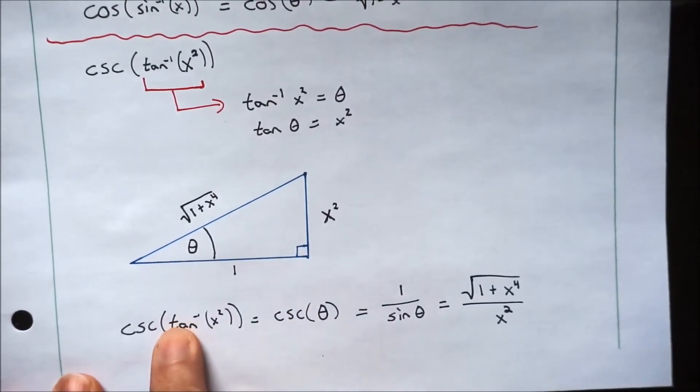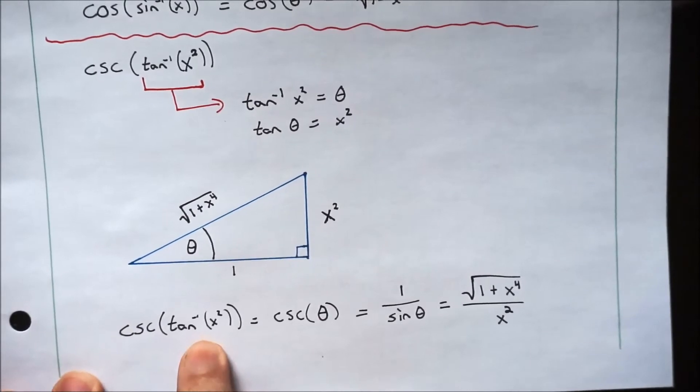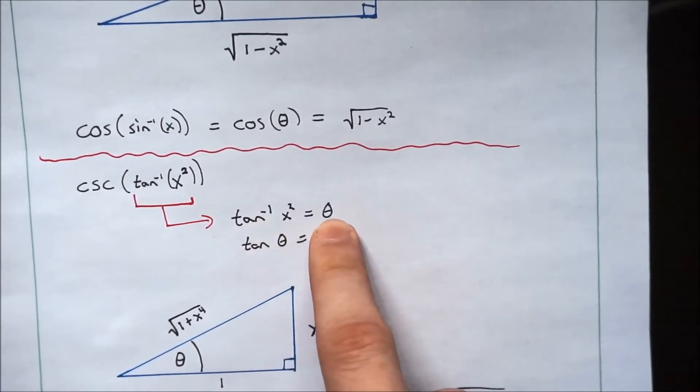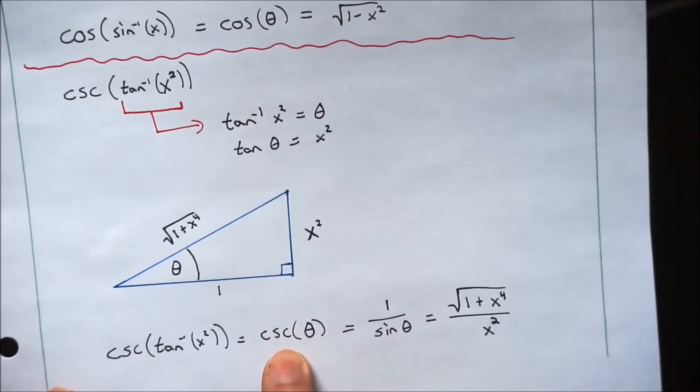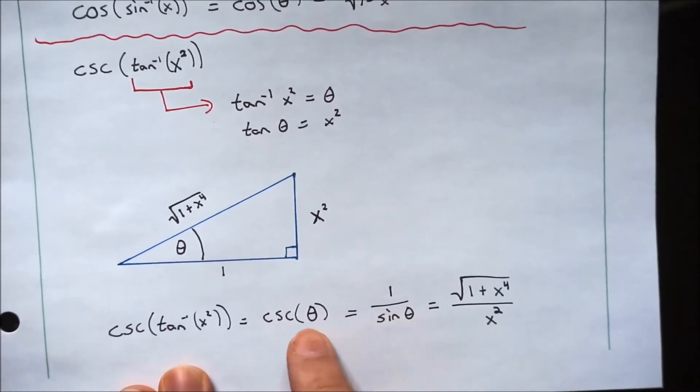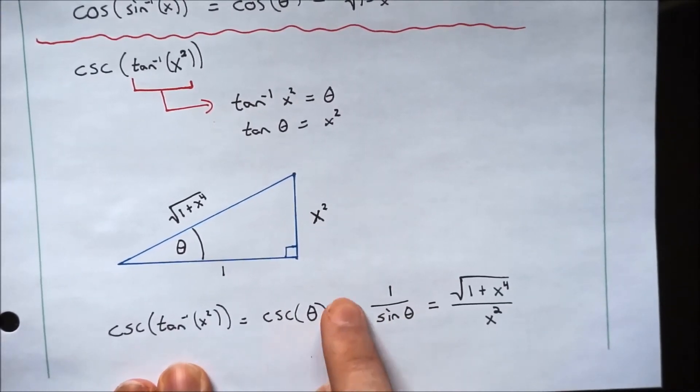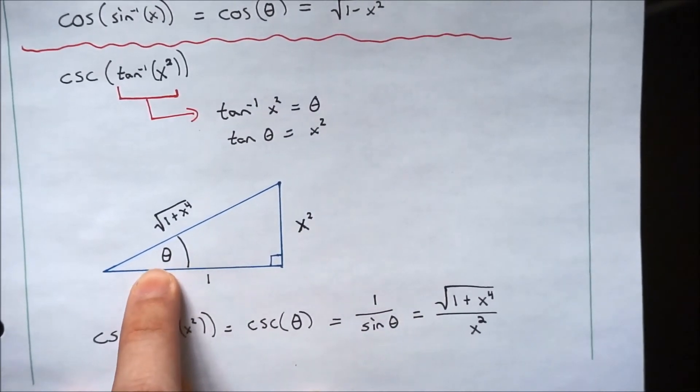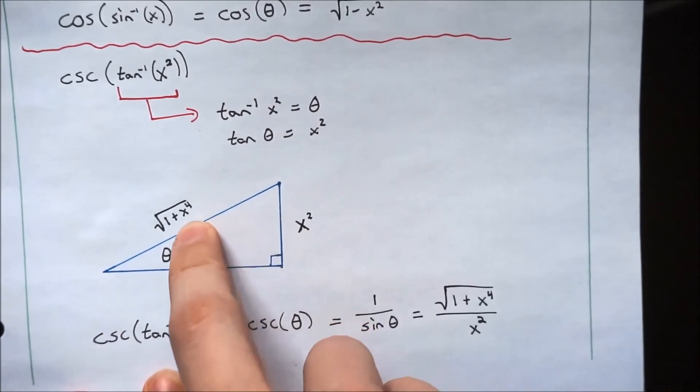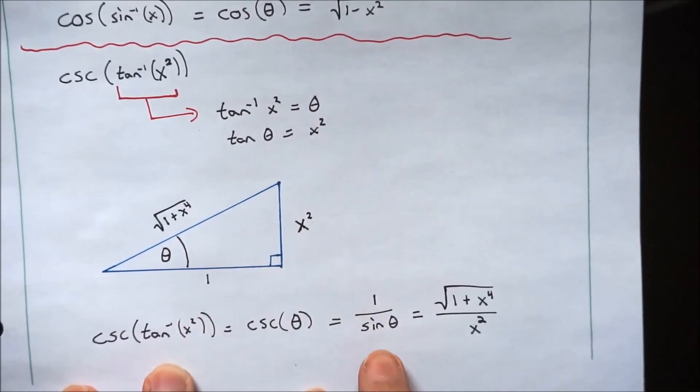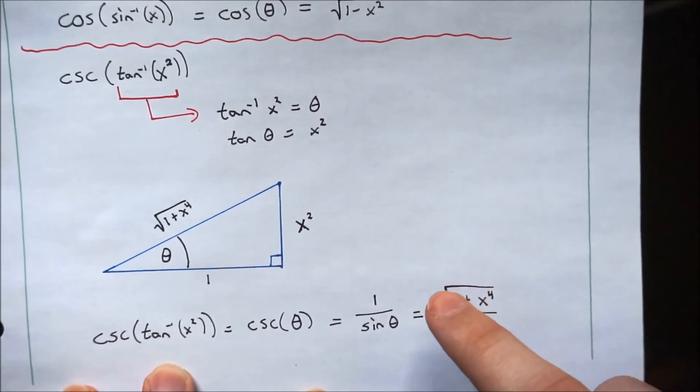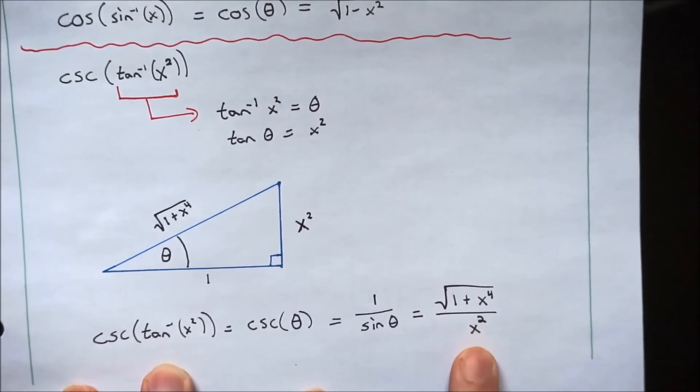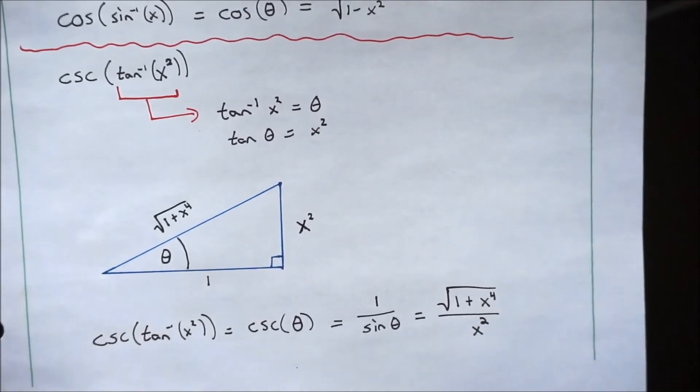Now we're going to bring back down the original equation, cosecant of the arc tangent of x squared. And we found that arc tangent of x squared is just an angle theta. So we're going to take the cosecant of theta, which, if you haven't seen that before, cosecant is just 1 over the sine of theta. So if we were to take the sine of this, sine is opposite over hypotenuse, it would be x squared over the square root of 1 plus x to the fourth. But we have 1 over that, so we just flip it. And we get the square root of 1 plus x to the fourth over x squared. That's your final answer.